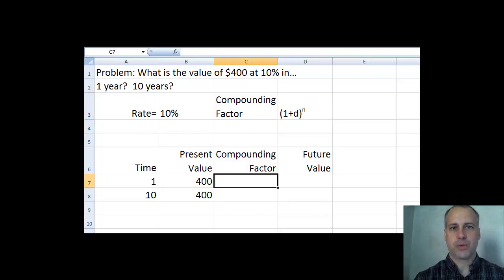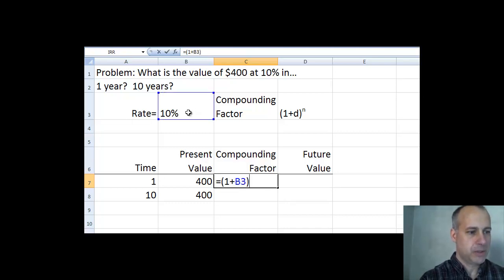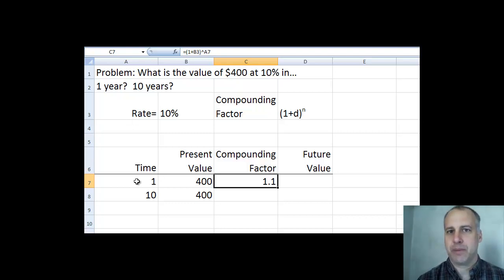You can watch in the formula bar or just watch what I type here. In this cell, the compounding factor is equal to 1 plus d, which is our rate, which I've put here in cell B3, close the parentheses, and then raise this, little caret, to the time, the number of periods. And I always put that at the beginning of the row that I'm considering. This gives me my compounding factor. And not too surprisingly, to figure out what something is worth in a year at 10% interest rate is simply going to be 1 plus the interest rate or 1.1.